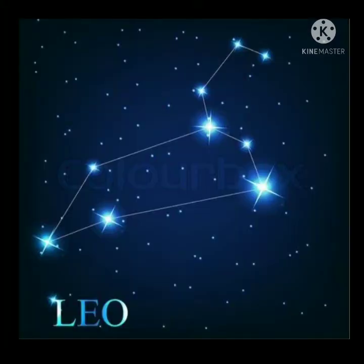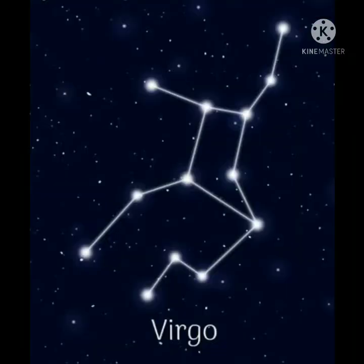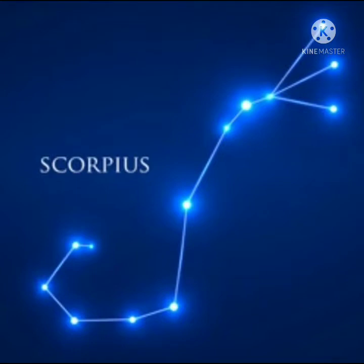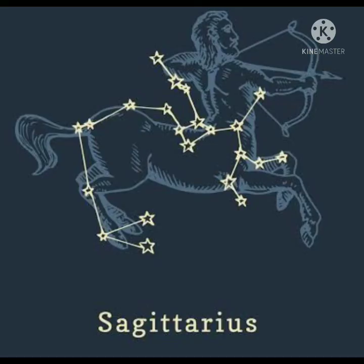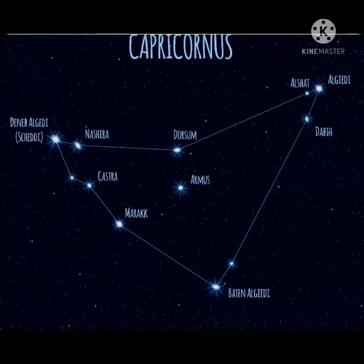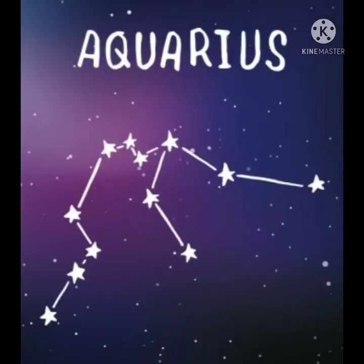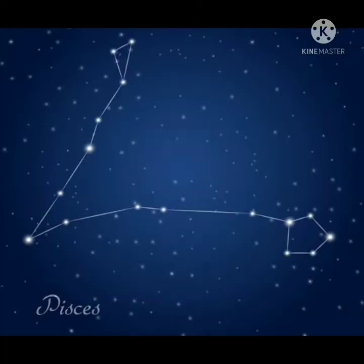The Earth revolves around the Sun and also rotates about its own axis. These two motions cause the same star to appear to rise four minutes earlier every day. We can also see a whole different set of stars in the sky after every six months, because the Earth revolves around the Sun and in six months' time moves to the other side of the Sun.